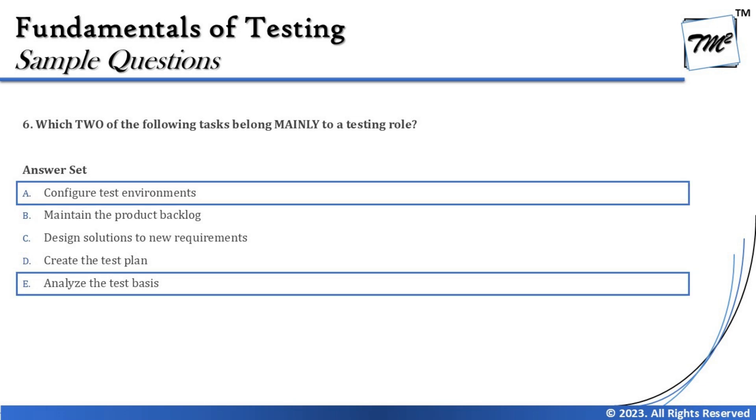The right answers for Question 6 are A — configure test environments — and E — analyze the test basis. That covers how test process activities are distributed between test management and testing roles. That's all from this tutorial. Each video covers unique exam tips and tricks. Feel free to comment below with any queries — till then, keep learning, keep exploring, and happy learning!